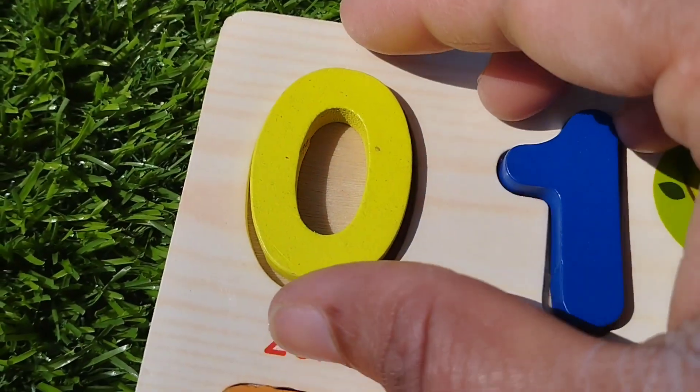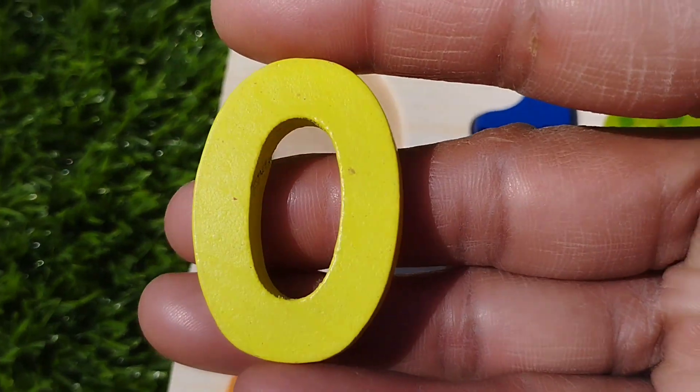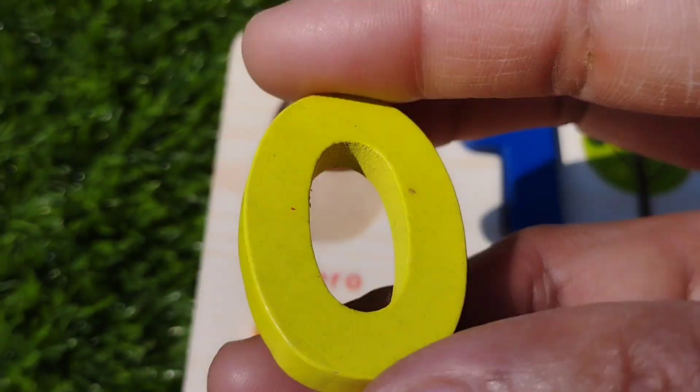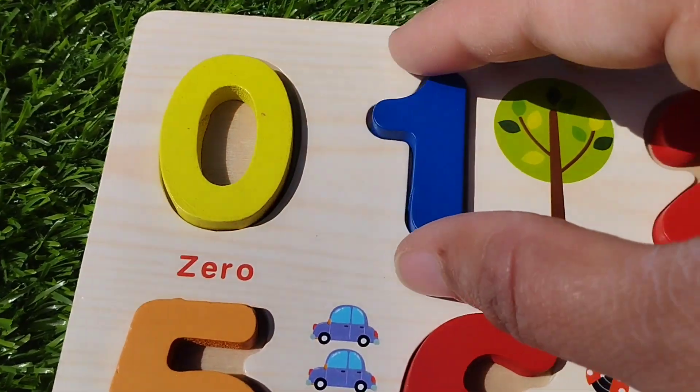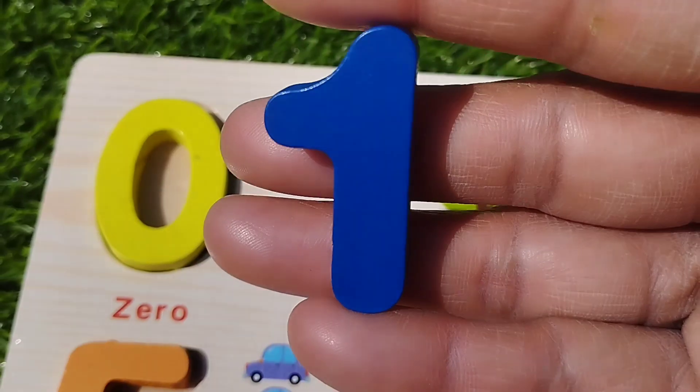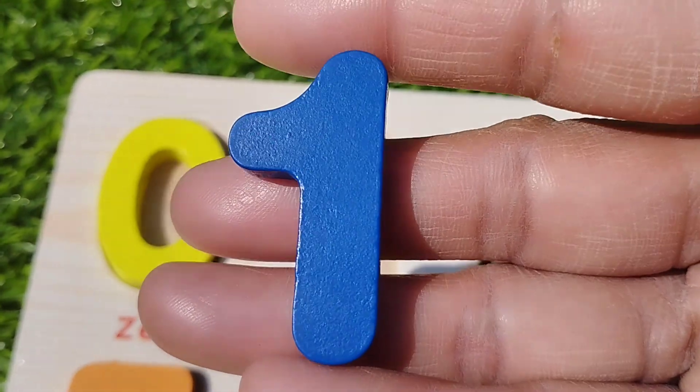Let's learn their names one by one. The first number is number zero. This is number zero. One, number one.